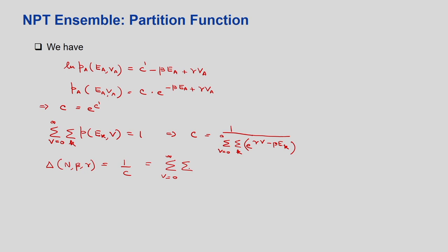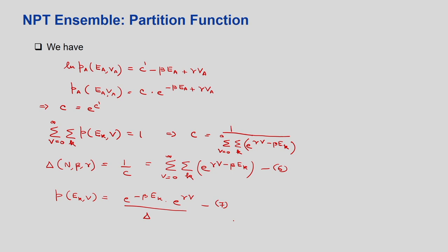The resulting expression is: P equals K times e to the power of minus gamma V minus beta E_k. This is the expression for the partition function. The probability of locating a particular microstate with energy E_k in volume V is e to the power of minus beta E_k times e to the power of gamma V, divided by delta. These two important expressions — equations 6 and 7 — define the partition function and the microstate probability for the NPT ensemble.